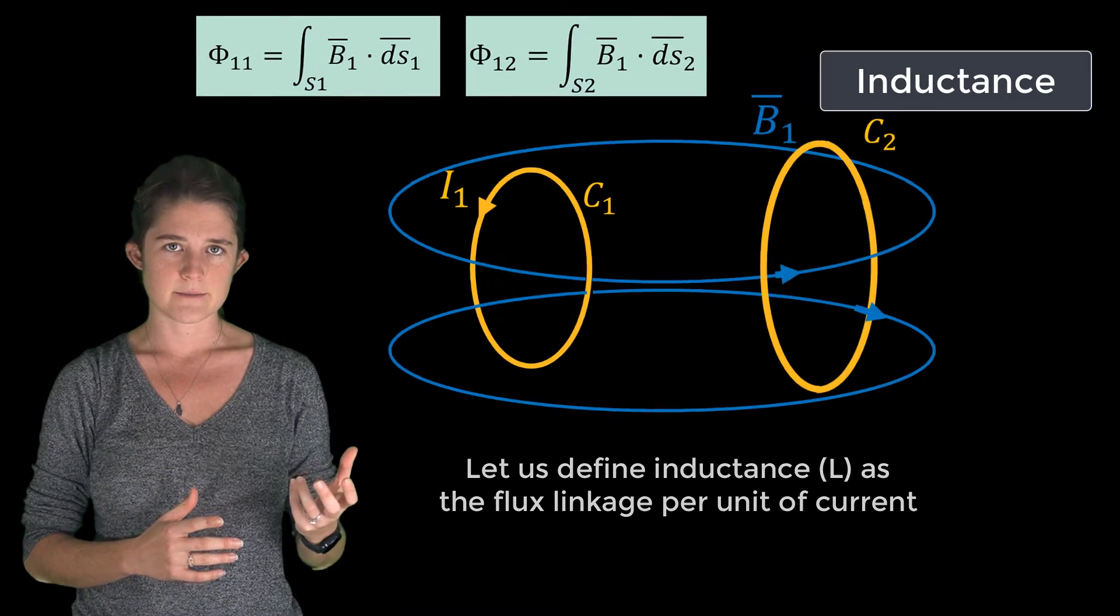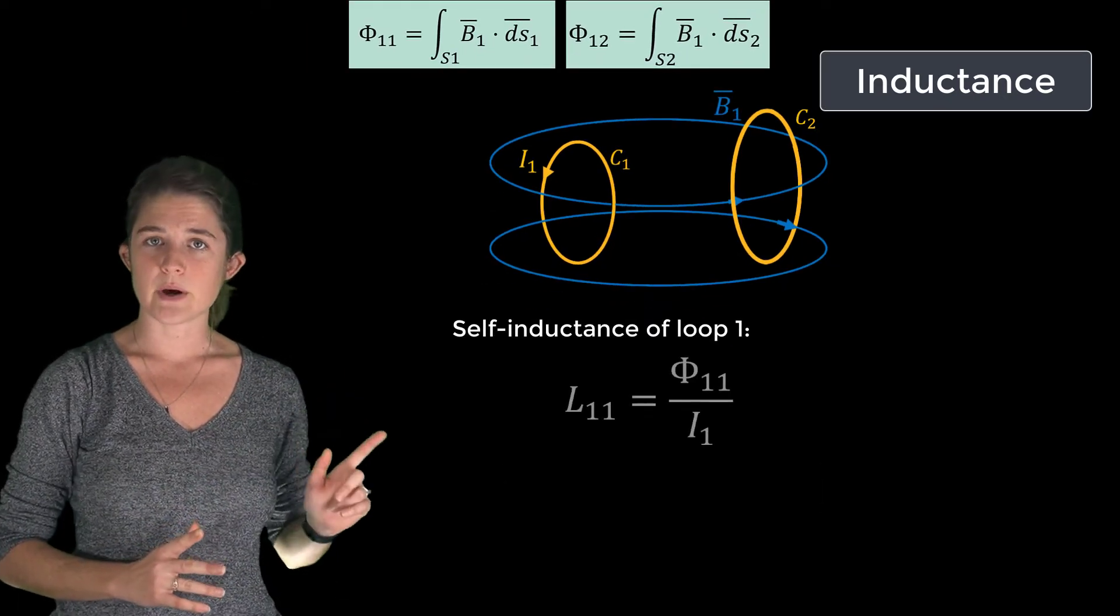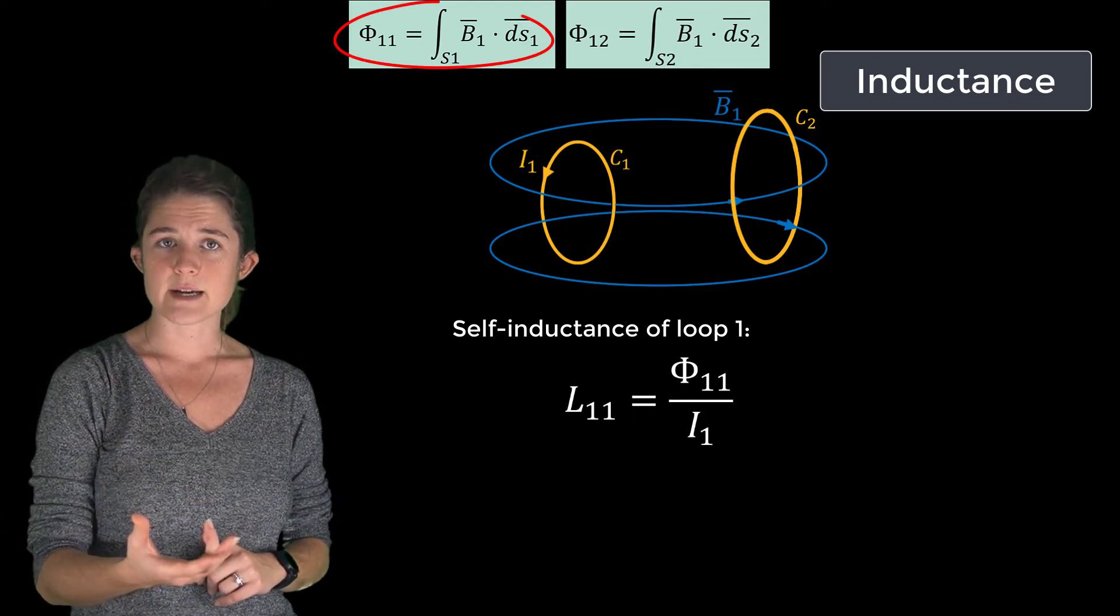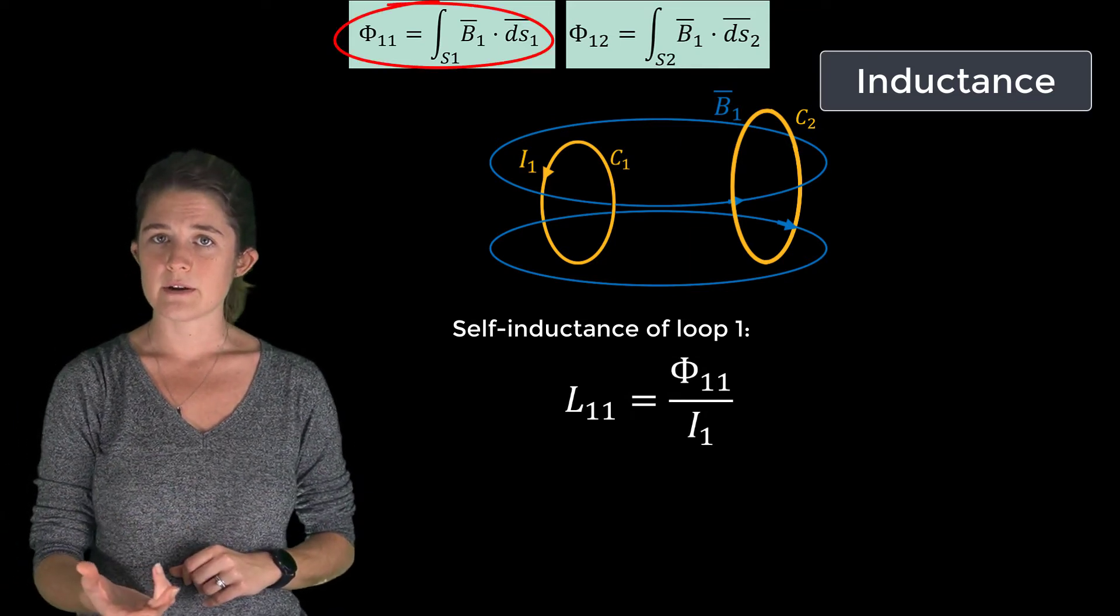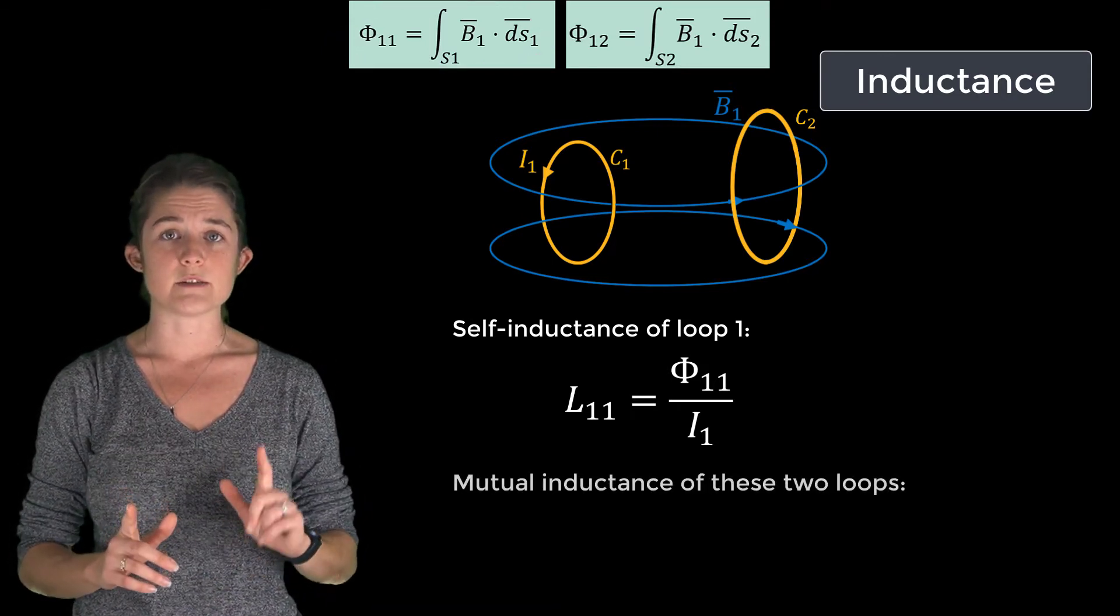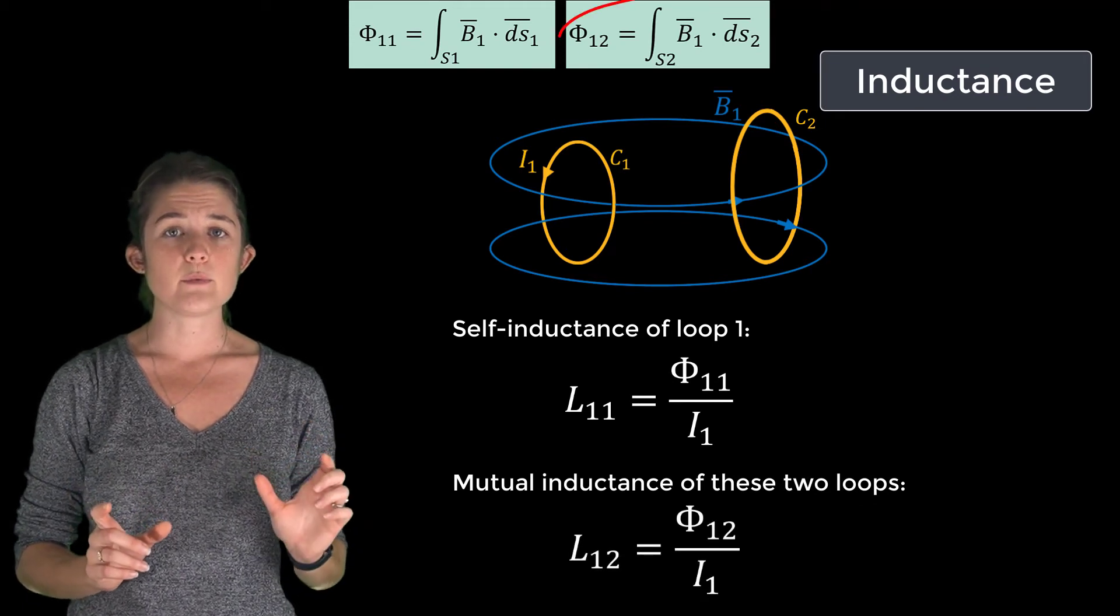So the self-inductance of the first loop, L11, will be equal to Φ11 (the total flux passing through C1 because of I1) divided by I1. And the mutual inductance between the loops, L12, will be equal to Φ12 divided by I1.